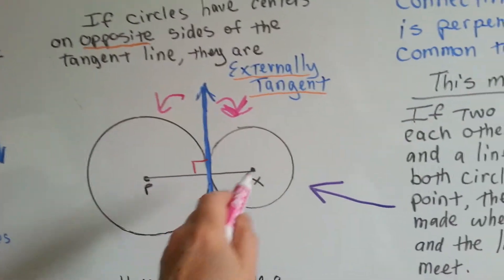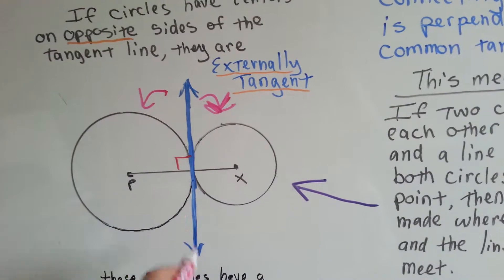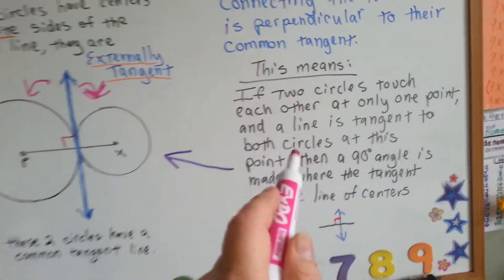So, here's the center point, here's the center point, this is the line of centers. Here's the tangent line. This makes a 90 degree angle. You know you're going to end up using this in a proof.